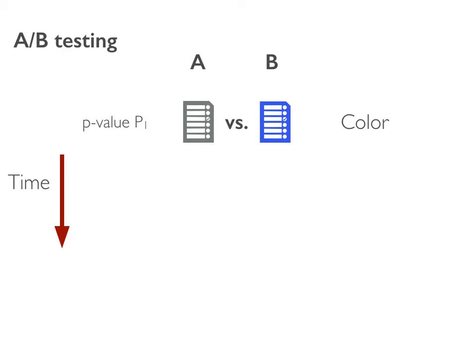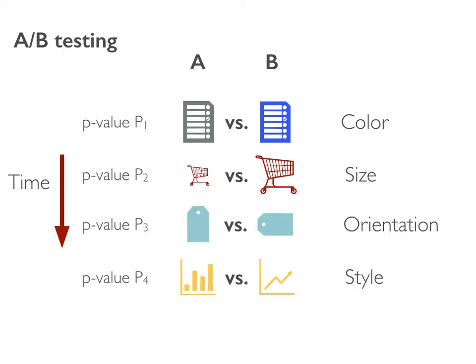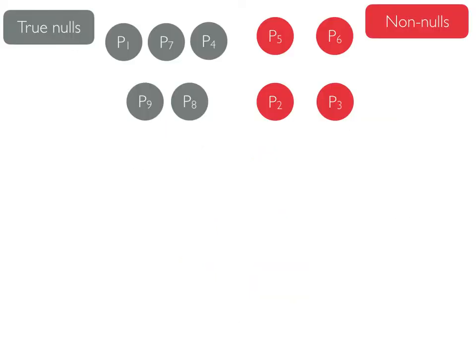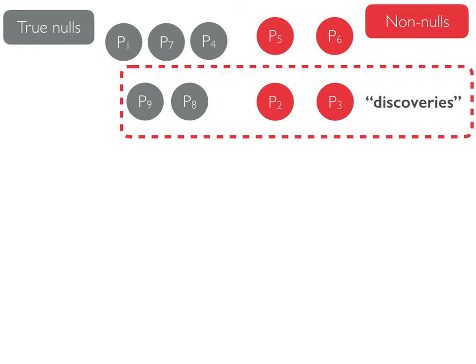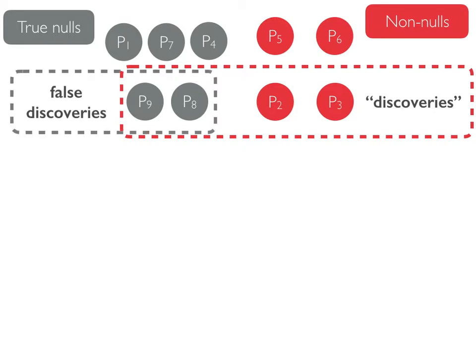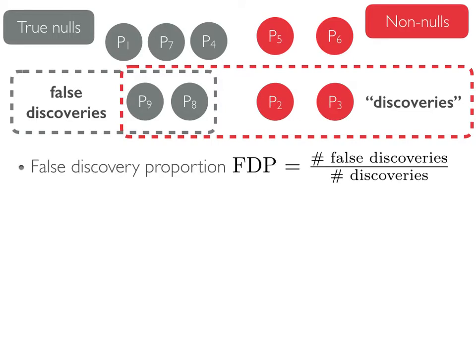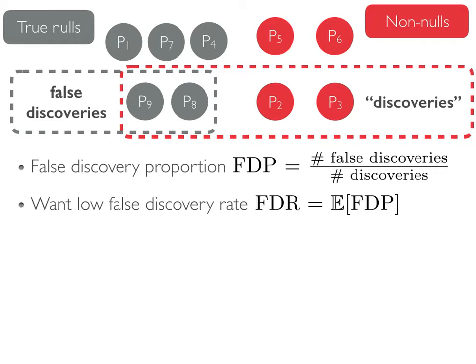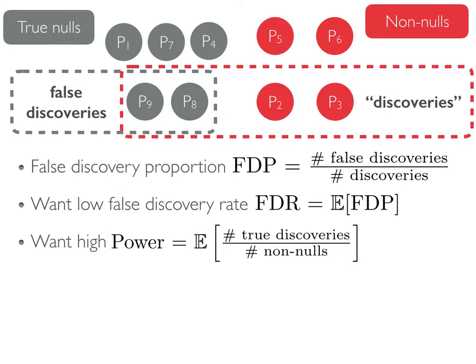As more products or features are added, companies often run hundreds or thousands of A-B tests over time. Unbeknownst to us, some null hypotheses are actually true, while others are non-null. The hypotheses that we proclaim as non-null are called discoveries, and false discoveries are those for which the null hypothesis is indeed true but we proclaimed otherwise. The false discovery proportion is defined as the ratio of false to total number of discoveries, and the false discovery rate is the expected FDP. We would like our procedure to have low FDR but high power, which is its ability to make true discoveries.